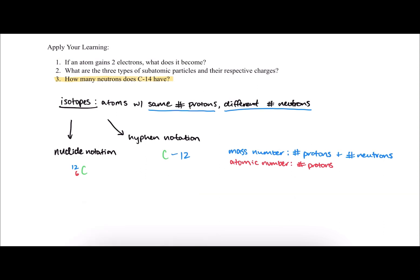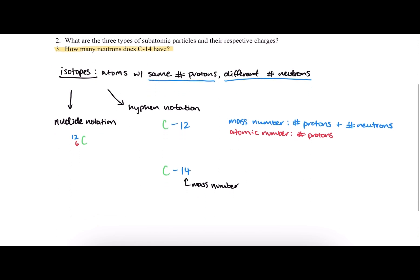Let's look back at our carbon-14 example. This is written in hyphen notation in the question, and we know that 14 represents the mass number of our carbon isotope. That is our number of protons and our number of neutrons in total. Looking at the periodic table, we can see that carbon has six protons because the atomic number is six. If we take the mass number and subtract the number of protons, we can conclude that there are eight neutrons in the carbon-14 isotope.